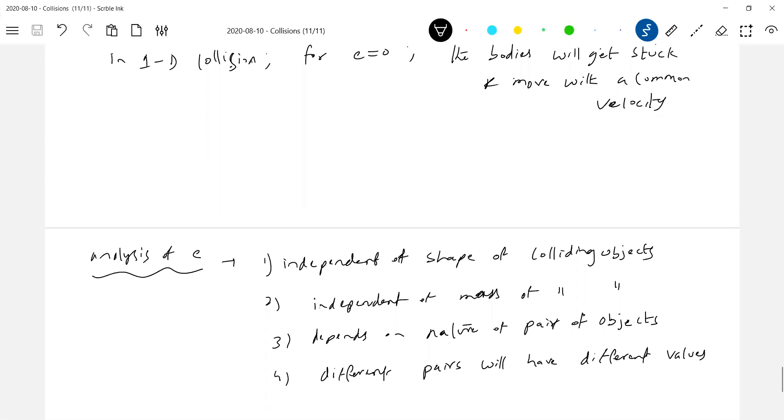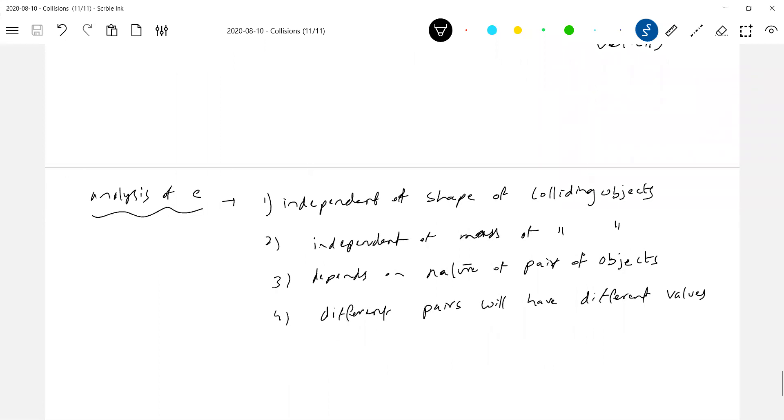This is a very difficult quantity to measure. So we have one more method of measuring it. The coefficient of restitution is directly proportional to under root of yield strength by elastic modulus. This is one more way of predicting the coefficient of restitution.